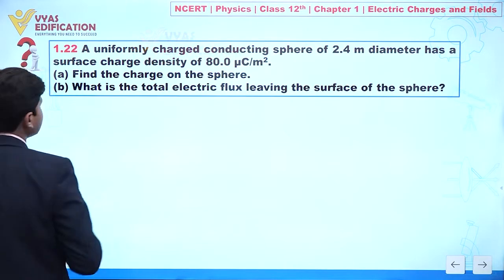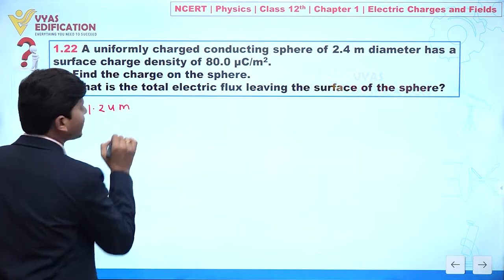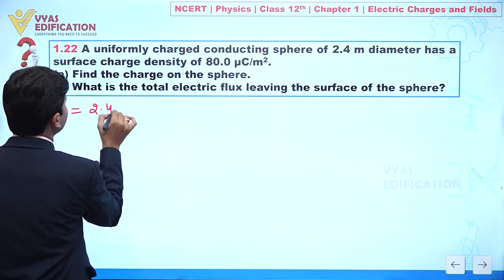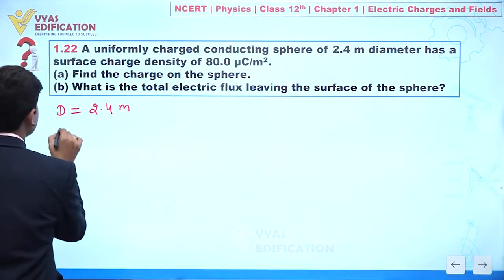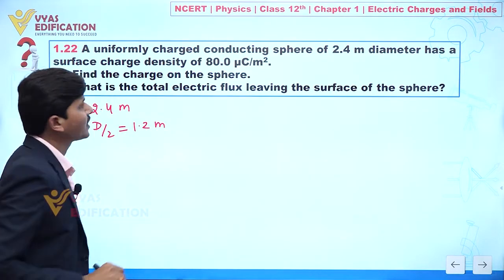Parameters - this is given to us. Diameter of the sphere is 2.4 meter. So what is radius of the sphere? We can write radius, this is given by d by 2, and this is 1.2 meter.